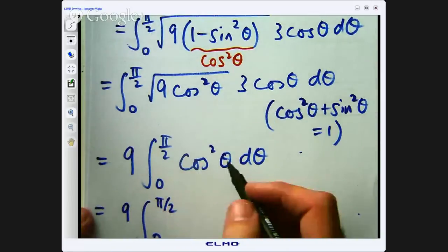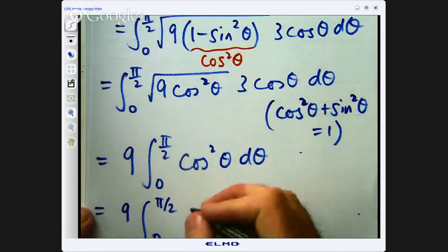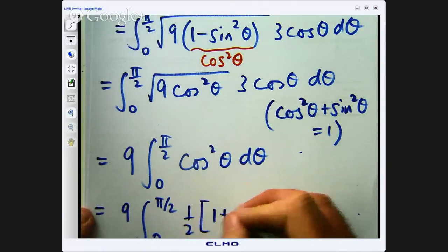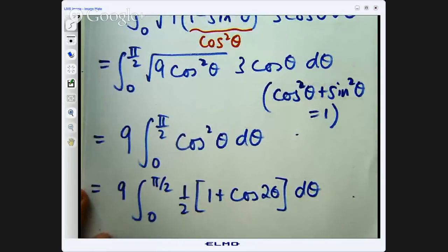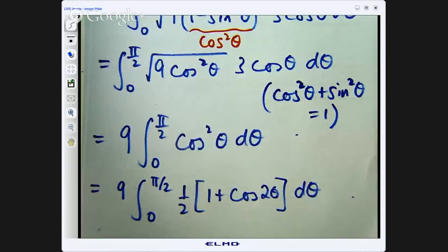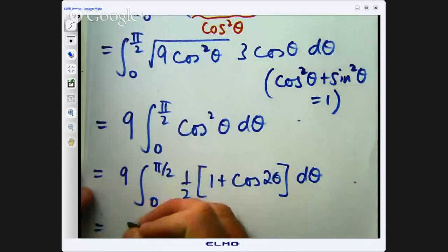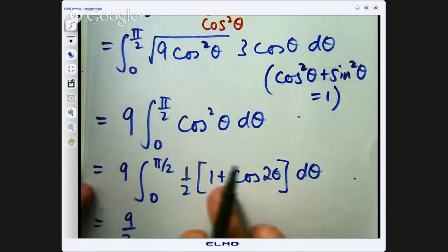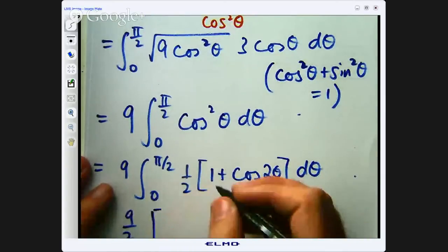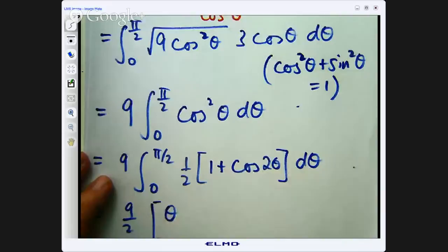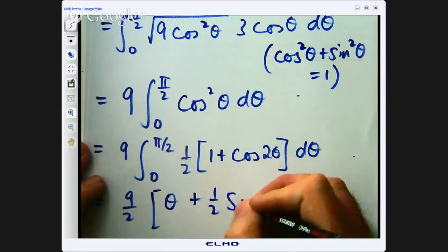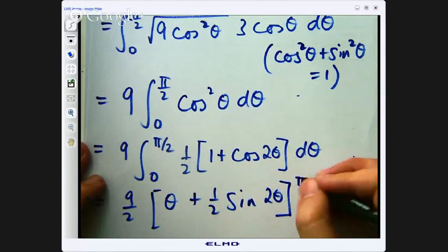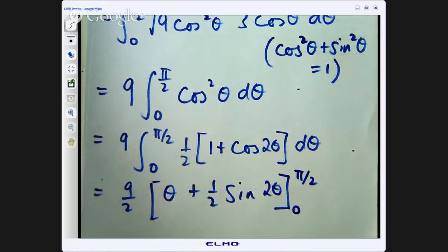So cos squared theta can be written in terms of cos 2 theta in the following way. So that to that is just the double angle formula so this half can come out the front and then I can integrate 1 and I can integrate cos 2 theta so if we integrate 1 with respect to theta I am going to get a theta there and if I integrate cos 2 theta I am going to get a half sine 2 theta.